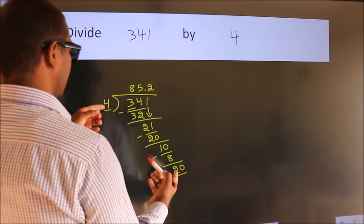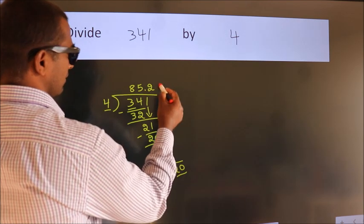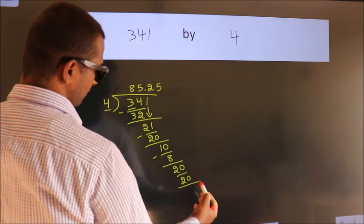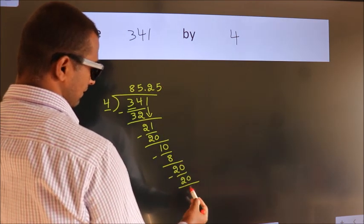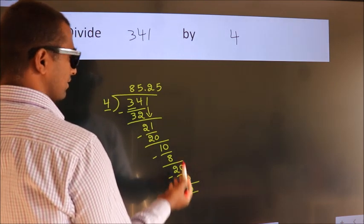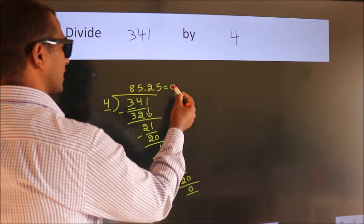When do we get 20 in the 4 table? 4 times 5 is 20. Now we subtract. We get 0. We got remainder 0. So this is our quotient.